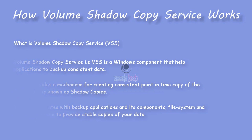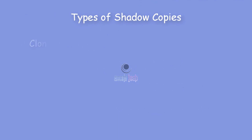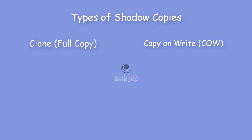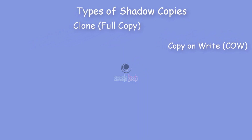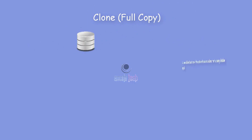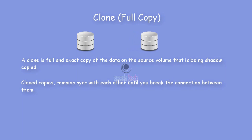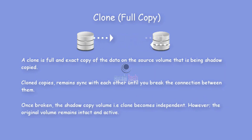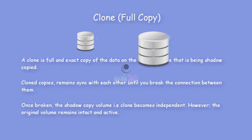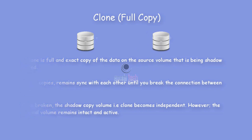Let's understand the different types of shadow copies. There are two types: Clone (full copy) and Copy-on-Write, also known as CoW. A clone is an exact full copy of the data of the source volume being shadow copied. These clone copies remain in sync with each other until you break the connection between them. Once the connection is broken, the clone becomes independent; however, the original volume still remains intact and active.